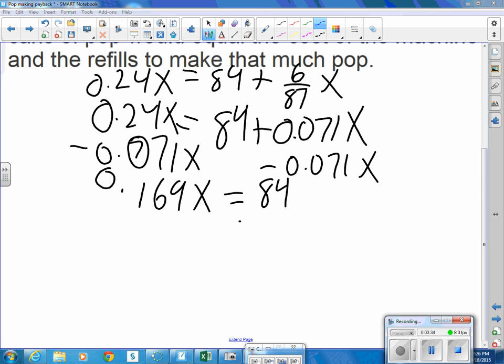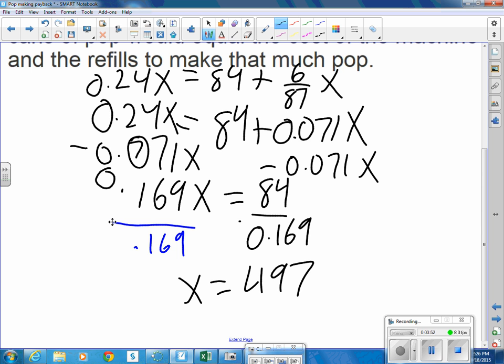So let's divide by that 0.169 and that means the number of cans is equal to 497. So it takes a little bit longer to show profitability at that point to pay for the pop and the refills that were purchased.